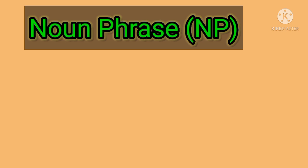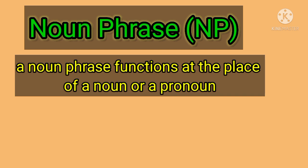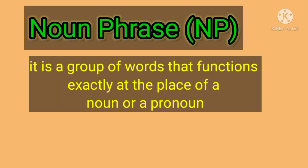Now let's begin to speak about noun phrases in particular. We have seen that a phrase is a group of words that has a specific grammatical function. A noun phrase is also a group of words that has a specific grammatical function, but it is differentiated from other phrases because a noun phrase functions at the place of a noun or a pronoun.